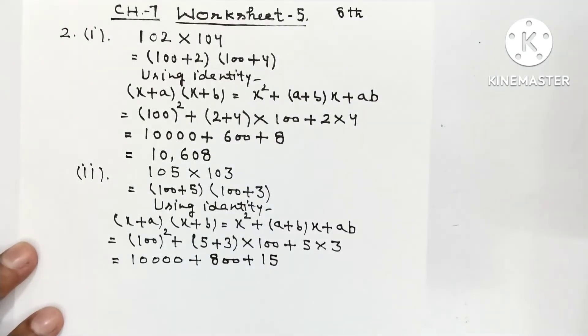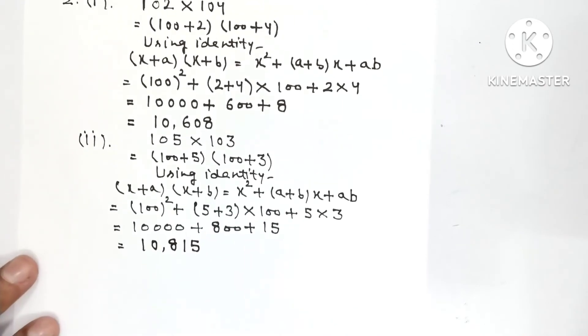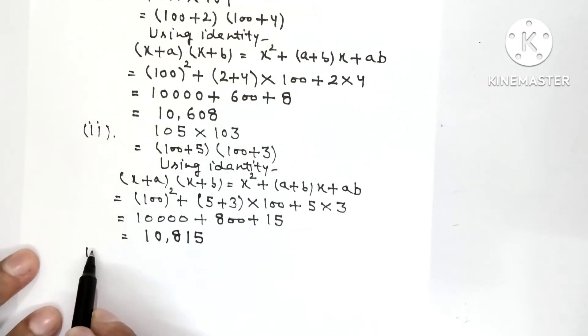So 10,000, add 815. Add, you will get 10,815.